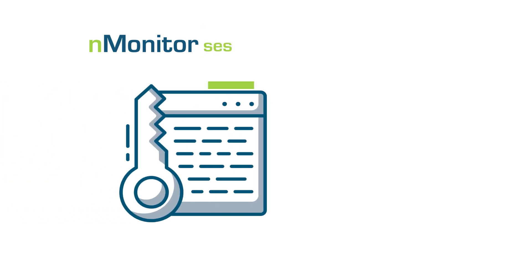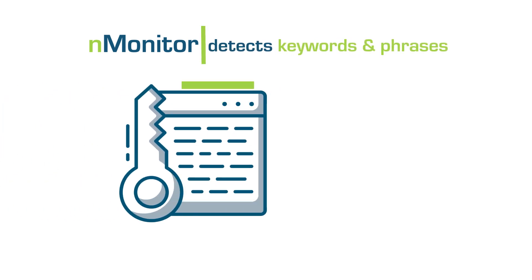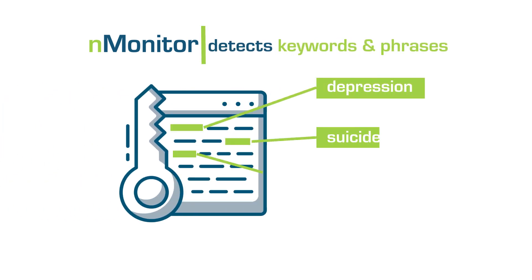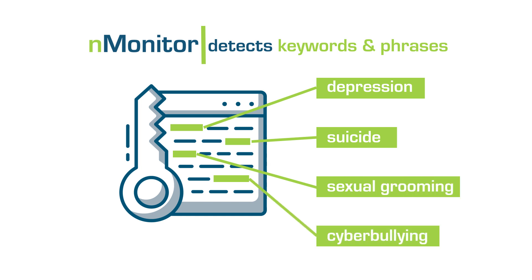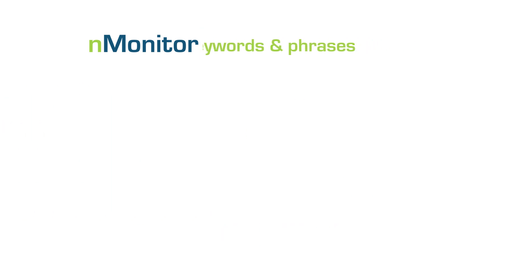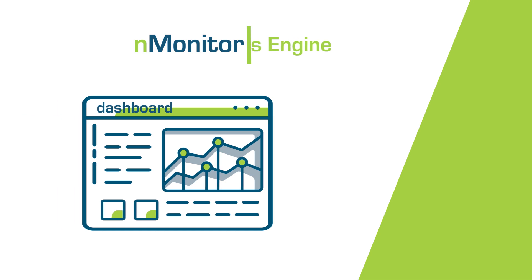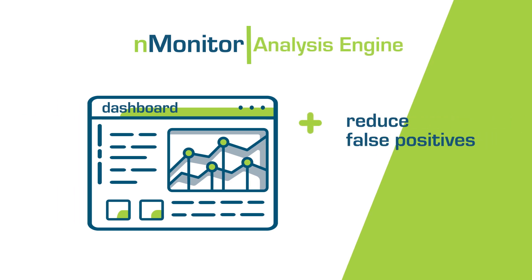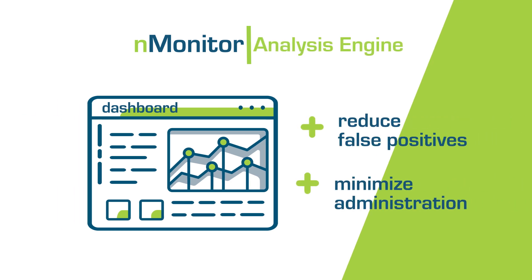It detects keywords and phrases and recognises the warning signs of issues such as depression, suicide, sexual grooming and cyberbullying. nMonitor also contains an analysis engine to reduce false positives and minimise administration.